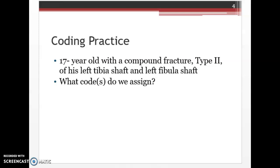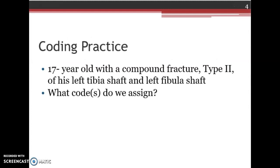Now, let's do a practice case. In this example, we have a 17-year-old with a compound fracture, type 2, of his left tibia shaft and left fibula shaft. So, what code or codes are we going to assign? We're going to code for a tibia fracture and a fibula fracture. First, let's go open up our ICD-10 CM book. We're going to go to F to fracture. Once you get to fracture, you're going to go to tibia, and then you're going to see shaft in parentheses. That gives us code S82.20 with a hyphen. Remember, the hyphen means that we need an additional character. So, now you always verify in the tabular. We're going to flip to the tabular section to S82.20.